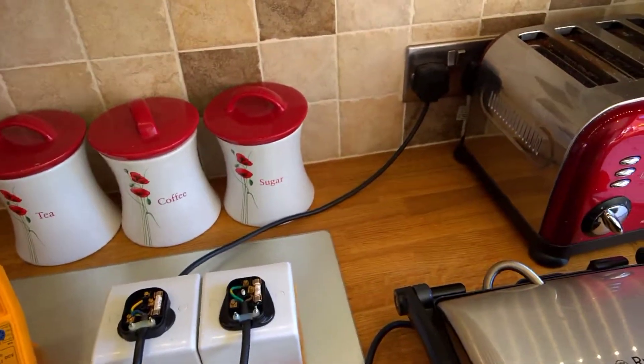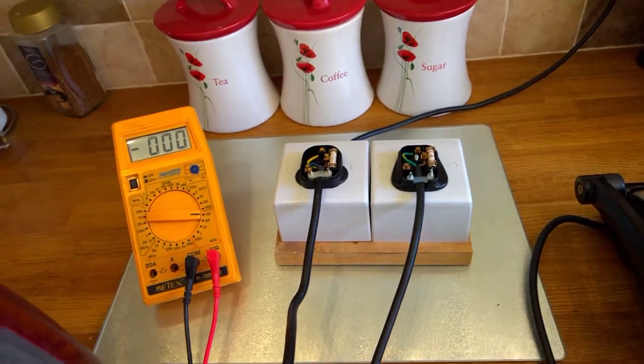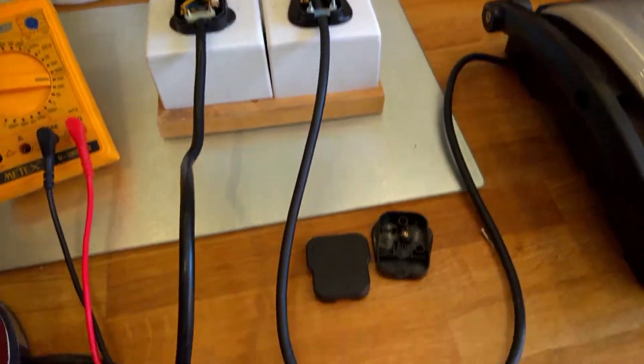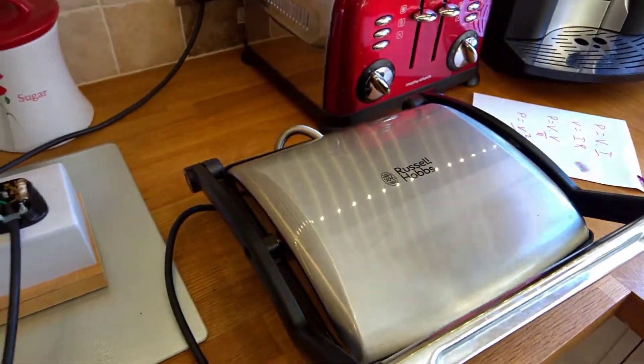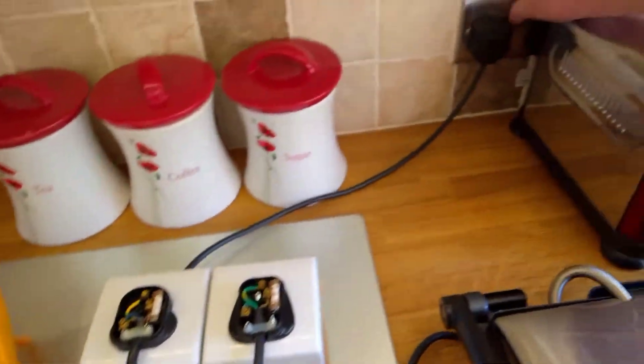Alright then, here we go. So we've got the adaptor plugged into the mains. One plug goes off to the kettle. The other plug goes off to the Panini Grill. Power on.